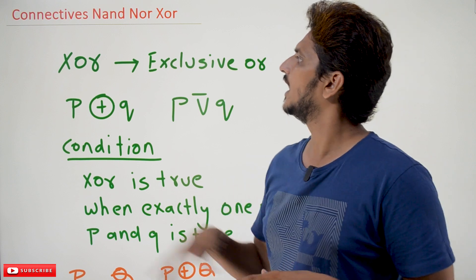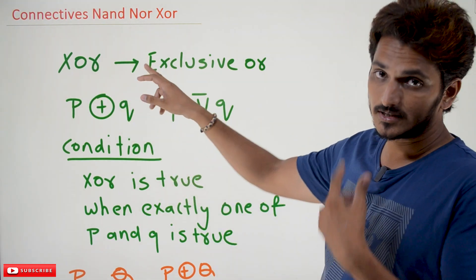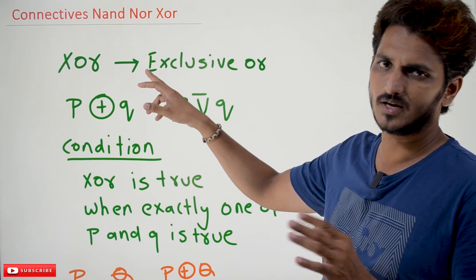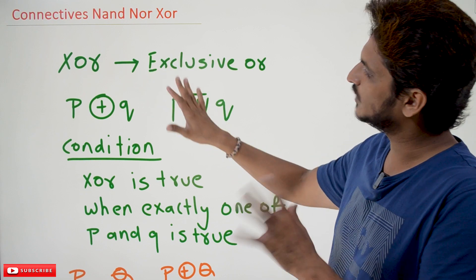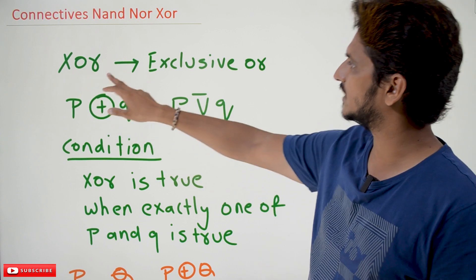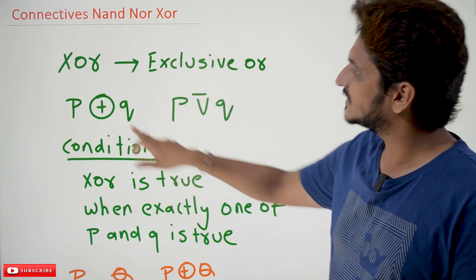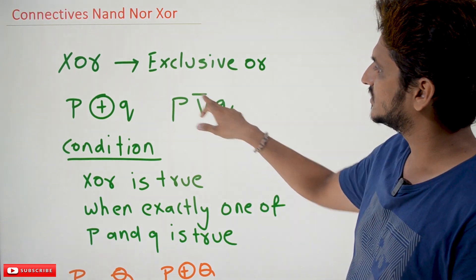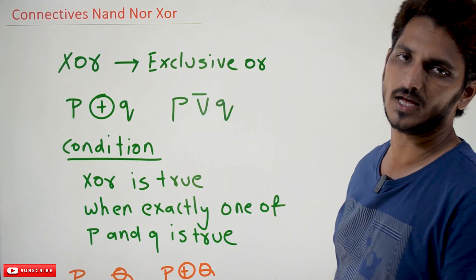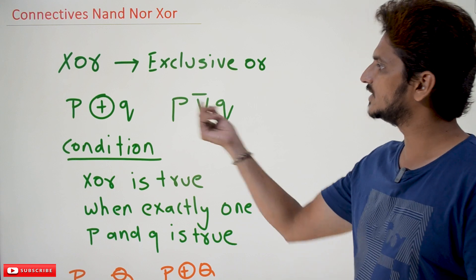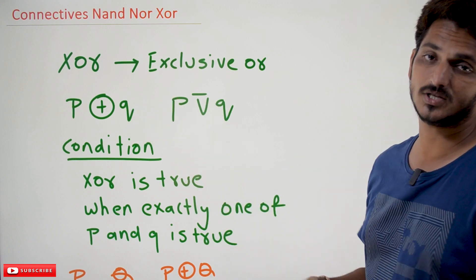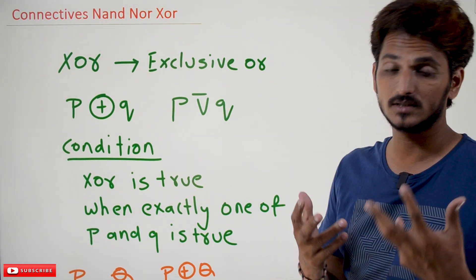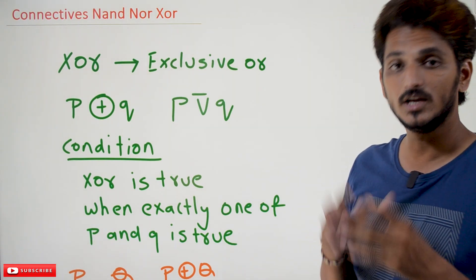Coming to today's class — XOR is another connective which we are going to cover. We are not going to use it mostly in our syllabus, but we need to understand what XOR means. The symbol for XOR is given like this: you take the disjunction symbol and above that you add a slash. These two symbols are used to denote the XOR connective.